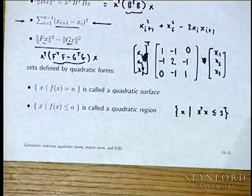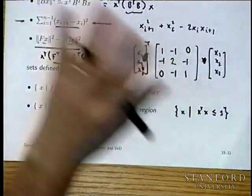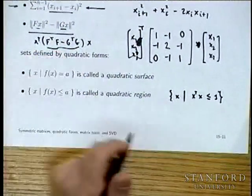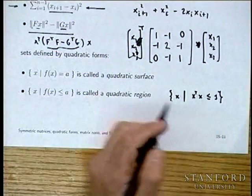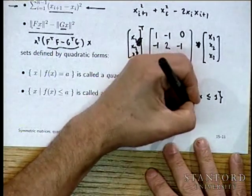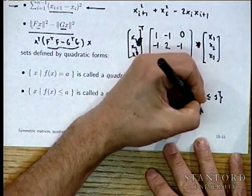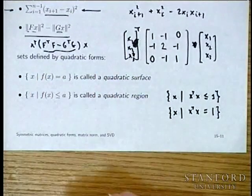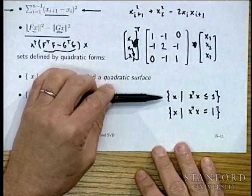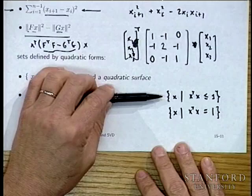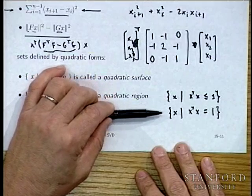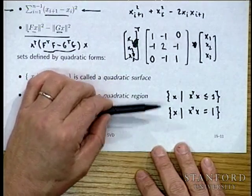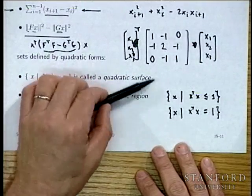In the context of a quadratic form, the identity matrix I simply represents the sum of squares — the norm squared. The set where X transpose X is less than 1 is the unit ball, and where it equals 1 is the unit sphere, though people sometimes confuse these terms.